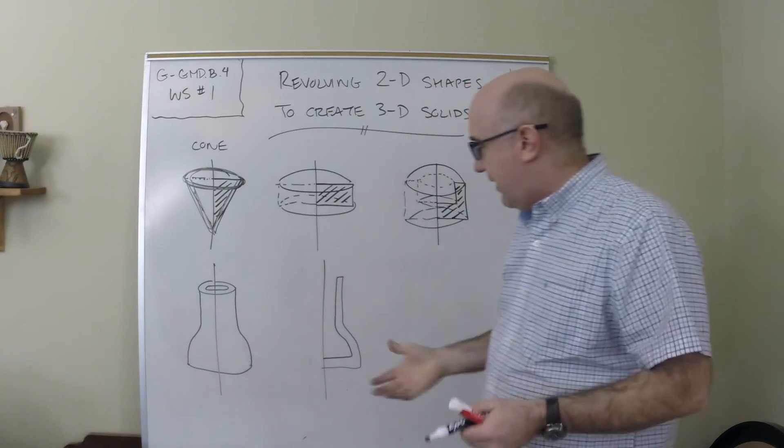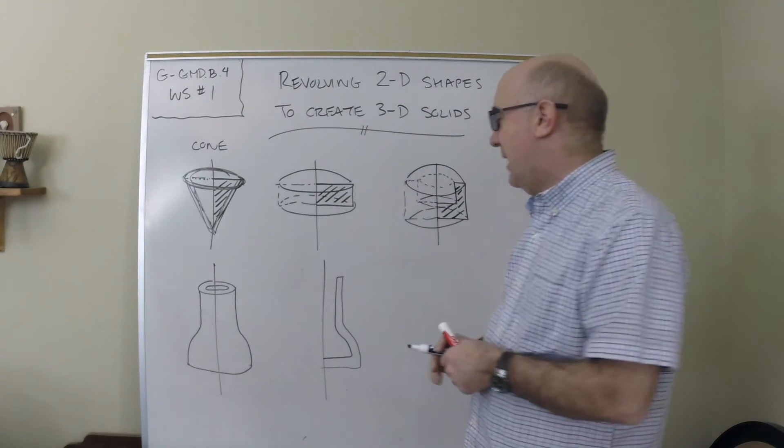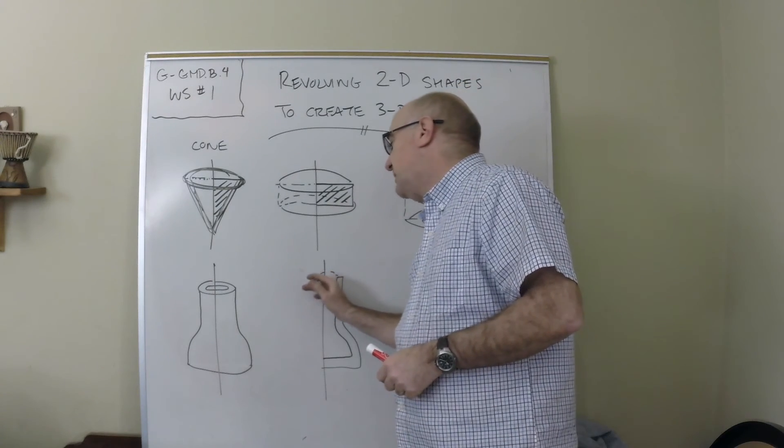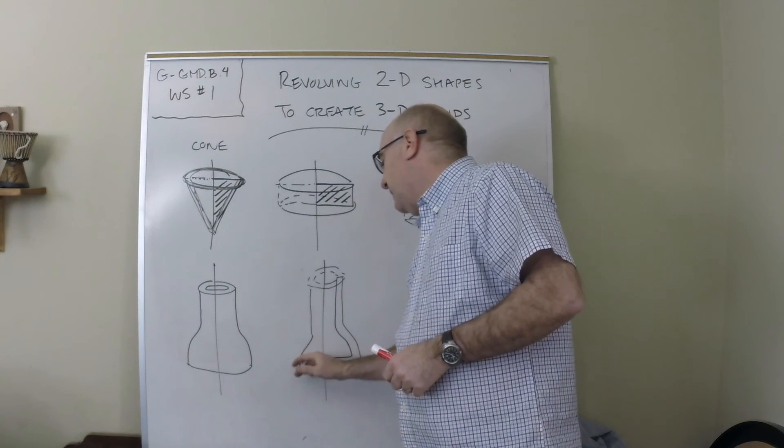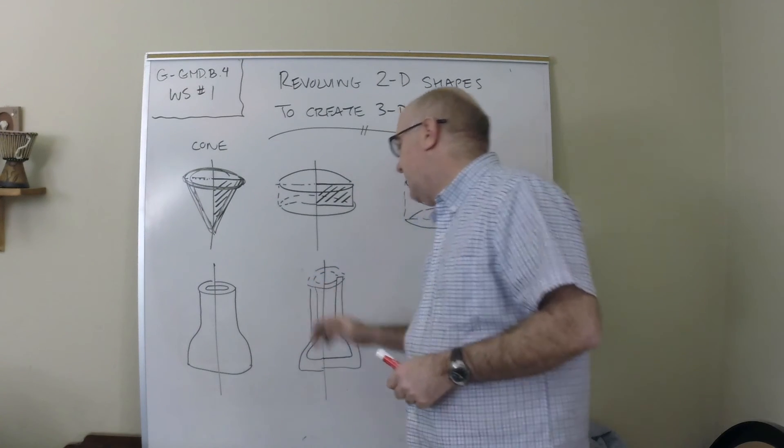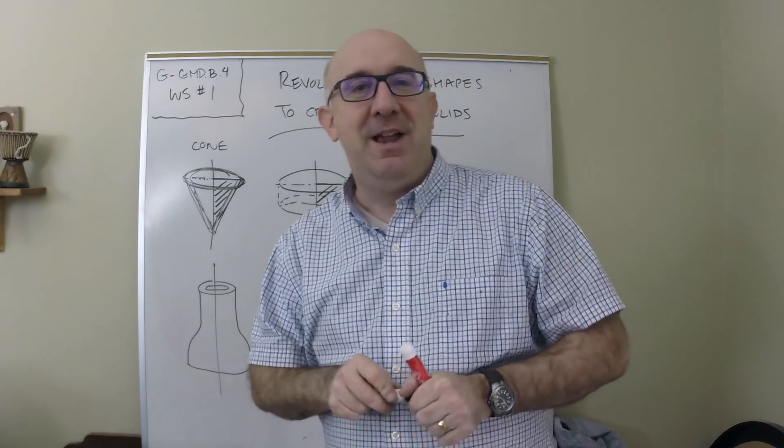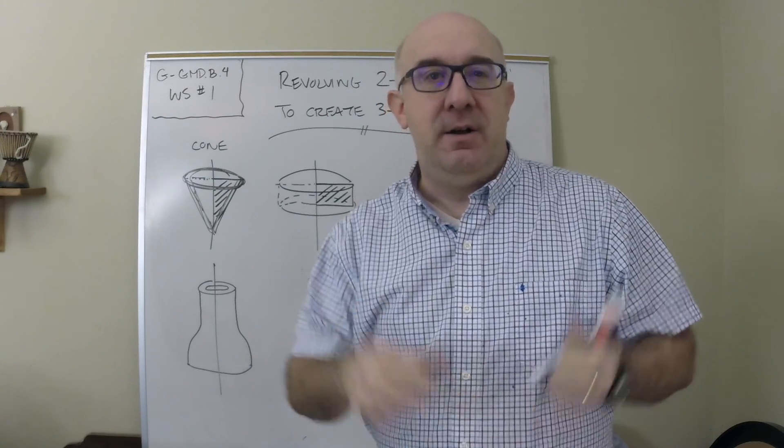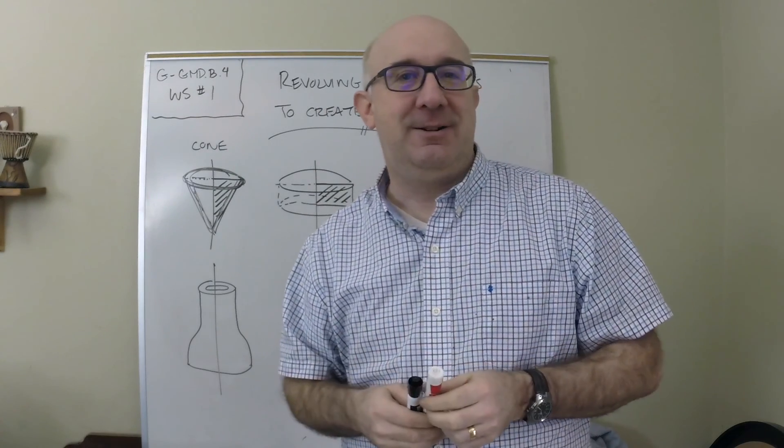And then you would have the vase or whatever it is that you've just created. You need a little space there so it creates that opening hole, and then again it would create the other side of it. That one's a little bit better, a little more recognizable. This is fun—good visual connections, 2D heading into 3D. Cool stuff.